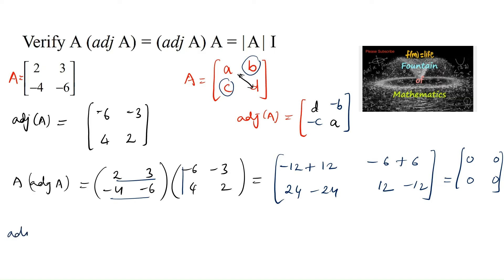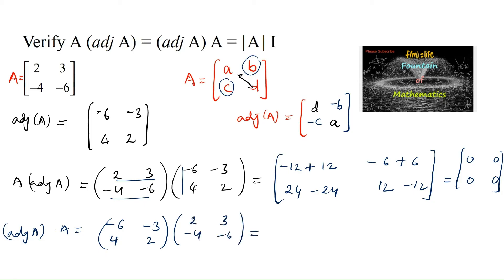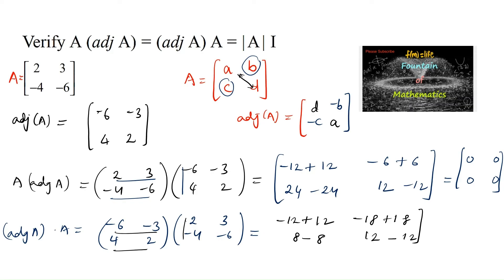Similarly, computing adjoint of A into A: [[-6, -3], [4, 2]] multiplied by [[2, 3], [-4, -6]]. First row, first column: (-6)×2 = -12, plus (-3)×(-4) = +12. First row, second column: (-6)×3 = -18, plus (-3)×(-6) = +18. Second row, first column: 4×2 = 8, plus 2×(-4) = -8. Second row, second column: 4×3 = 12, plus 2×(-6) = -12. So here also we are getting a zero matrix.